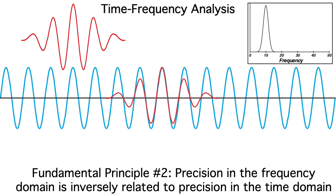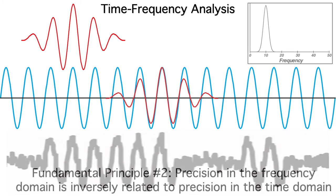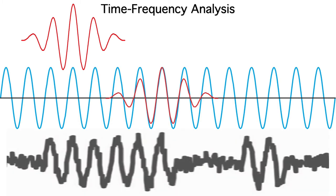If we think of an EEG epoch as consisting of the sum of a bunch of these wavelets, with wavelets of various frequencies at various times, we can transform an EEG epoch into a time-frequency representation. You can see how a single trial of our simulated EEG data could be fit by combining a bunch of these 10Hz wavelets.